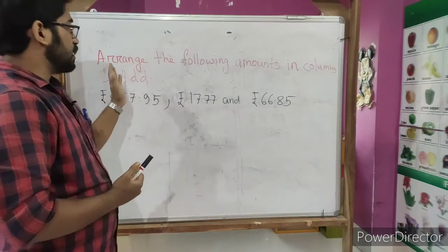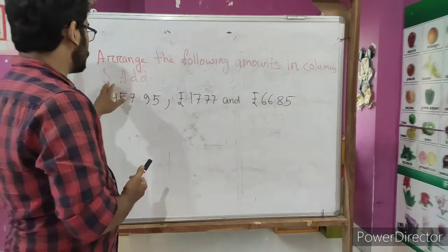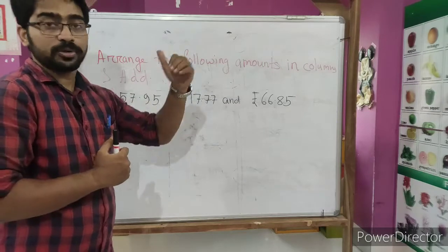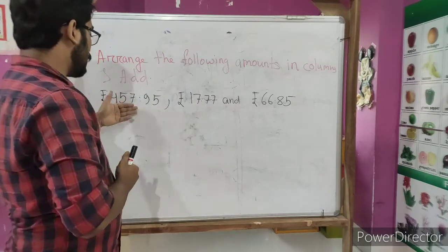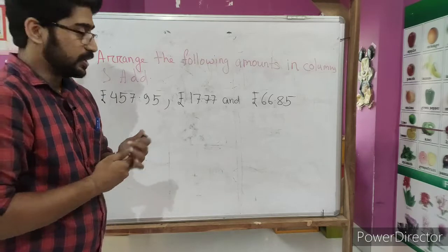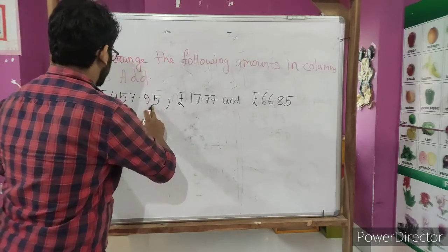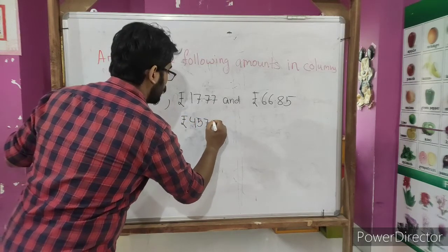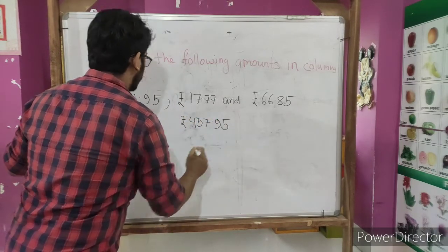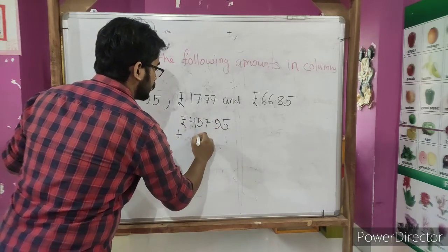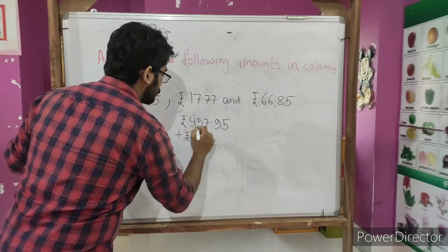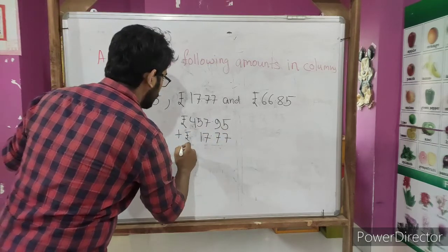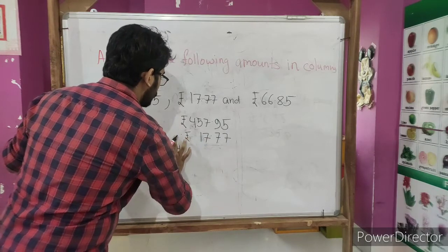Now we will do the next one. What has been given? Arrange the following amounts in columns and add. One by one we need to arrange and after that we need to add. So let's do it. At first, rupees 457.95 plus rupees 17.77, and after that plus rupees 66.85.